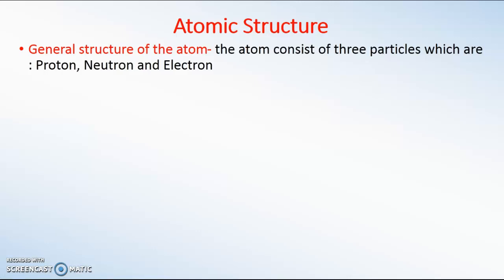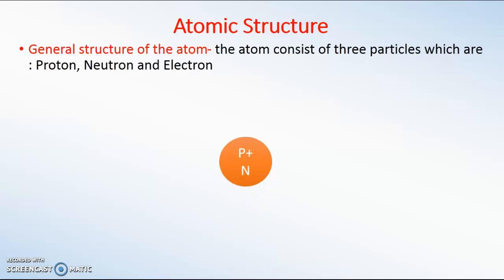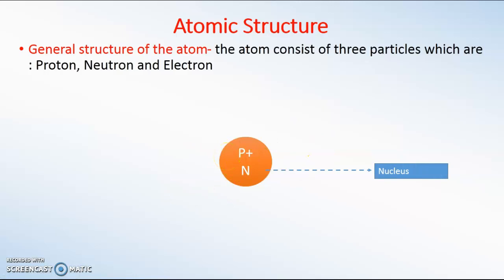The atom is made up of two main parts: the nucleus and the electrons outside it. When you go into the nucleus, you find protons and neutrons. In a nutshell, the three particles that make up the atom are protons and neutrons — which are in the nucleus — and electrons which are moving around. The electrons move along paths called orbits or shells drawn around the nucleus.